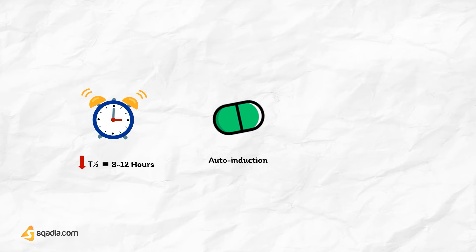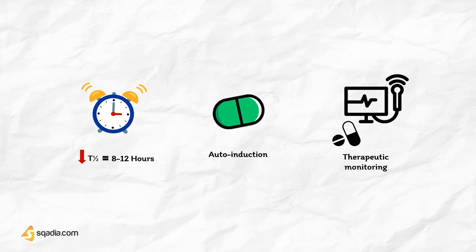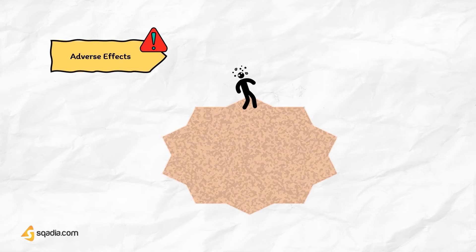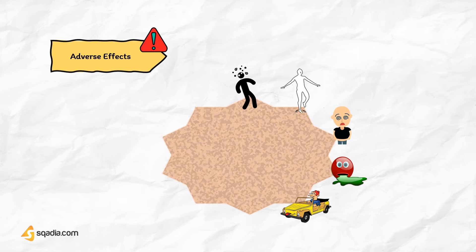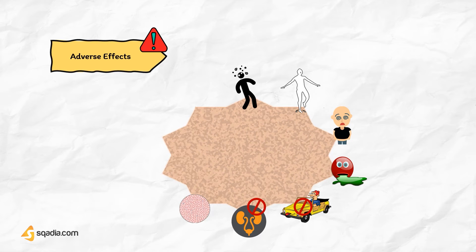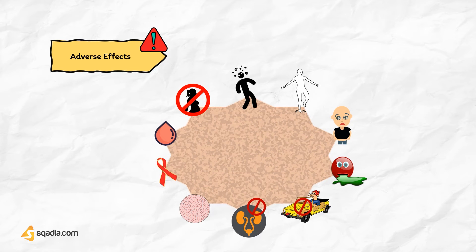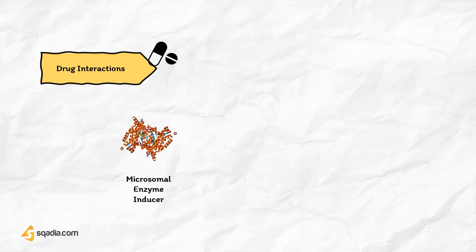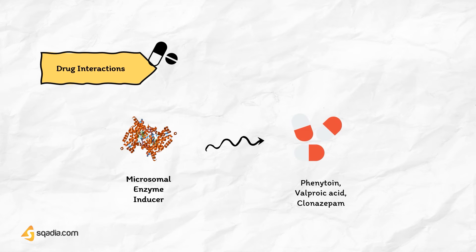Therefore, patients on carbamazepine need therapeutic drug monitoring. Adverse effects include drowsiness, vertigo, ataxia, diplopia, blurring of vision, nausea, vomiting, and dizziness. Driving is dangerous for patients on carbamazepine. It also causes water retention due to anti-diuretic effects. Hypersensitivity reactions like skin rashes may occur. Hematological toxicity includes leukopenia, thrombocytopenia, and rarely agranulocytosis and aplastic anemia. It is a teratogen. Carbamazepine is an enzyme inducer and can increase its own metabolism and that of other drugs like phenytoin, valproic acid, and clonazepam.